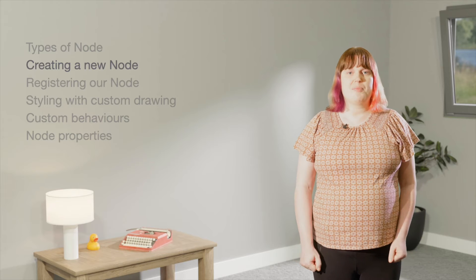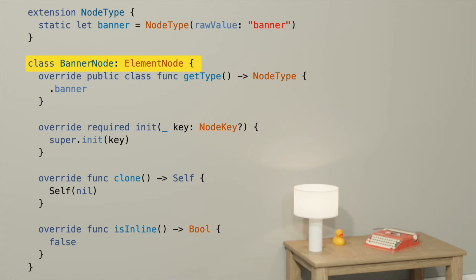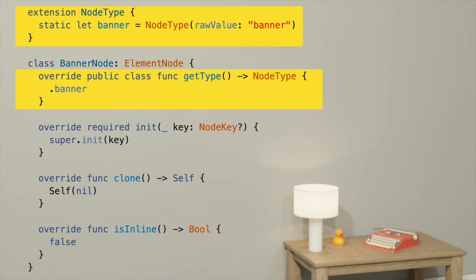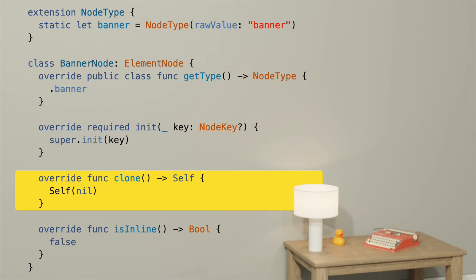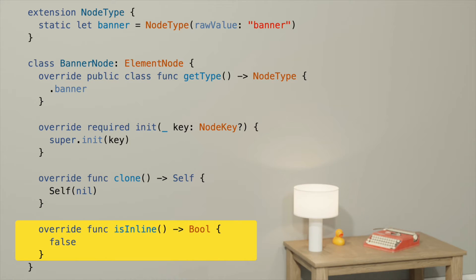Let's start by creating a new class extending element node. We also need to create a type for our node, which we do by extending node type, and then returning the new type in our node's getType method. We'll also give our node an initializer and a clone method. Element nodes can be inline or block level elements. We don't want to be inline, so we will override isInline and return false. That's actually the default, so we could have omitted this method, but it's a good idea to be explicit.